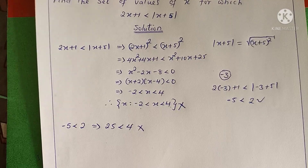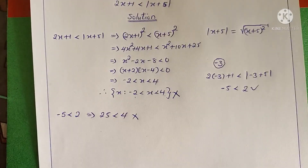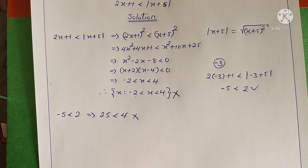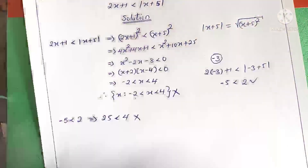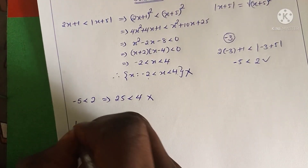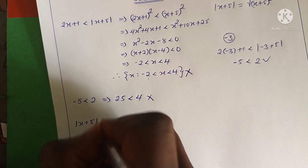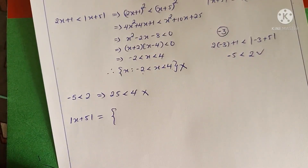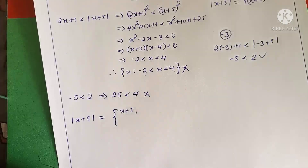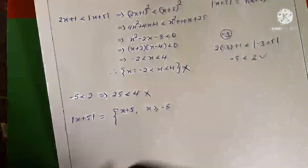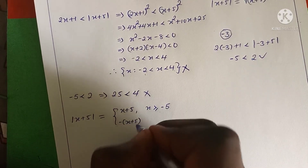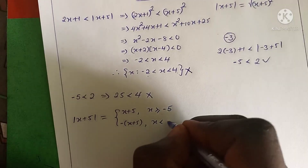So this is what you are supposed to do when asked to solve inequalities containing the absolute value function. You need to first define the absolute value function that appears in the equation. Here we have |x + 5|, and we know |x + 5| is defined as: x + 5 if x ≥ -5, or -(x + 5) if x < -5.